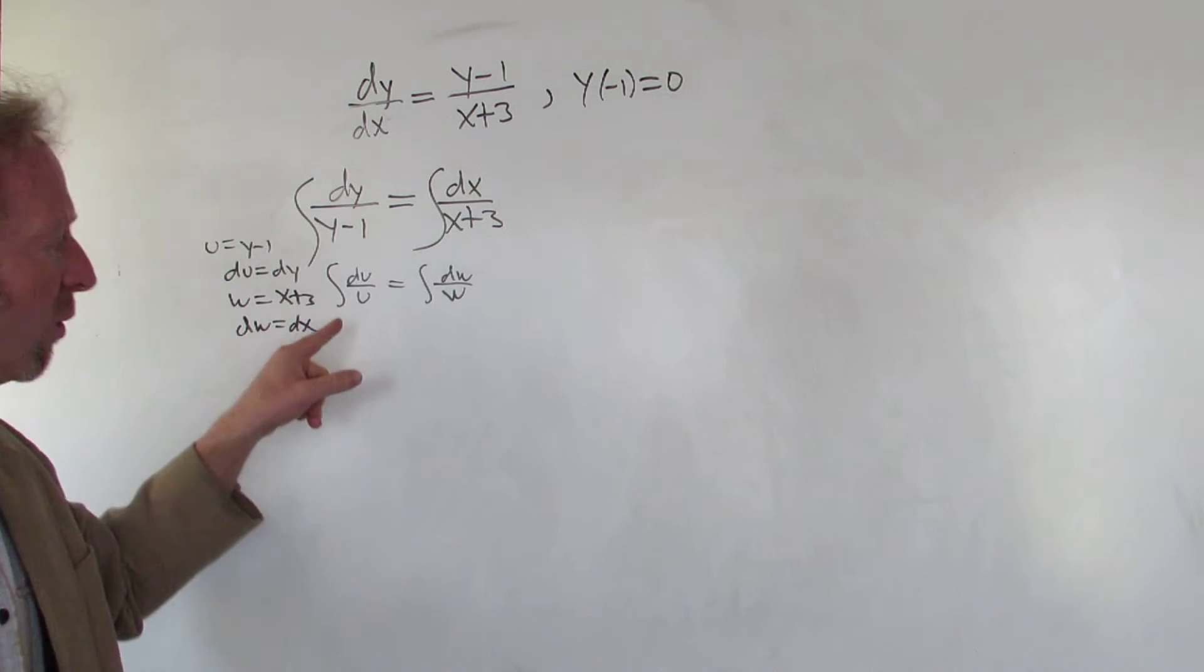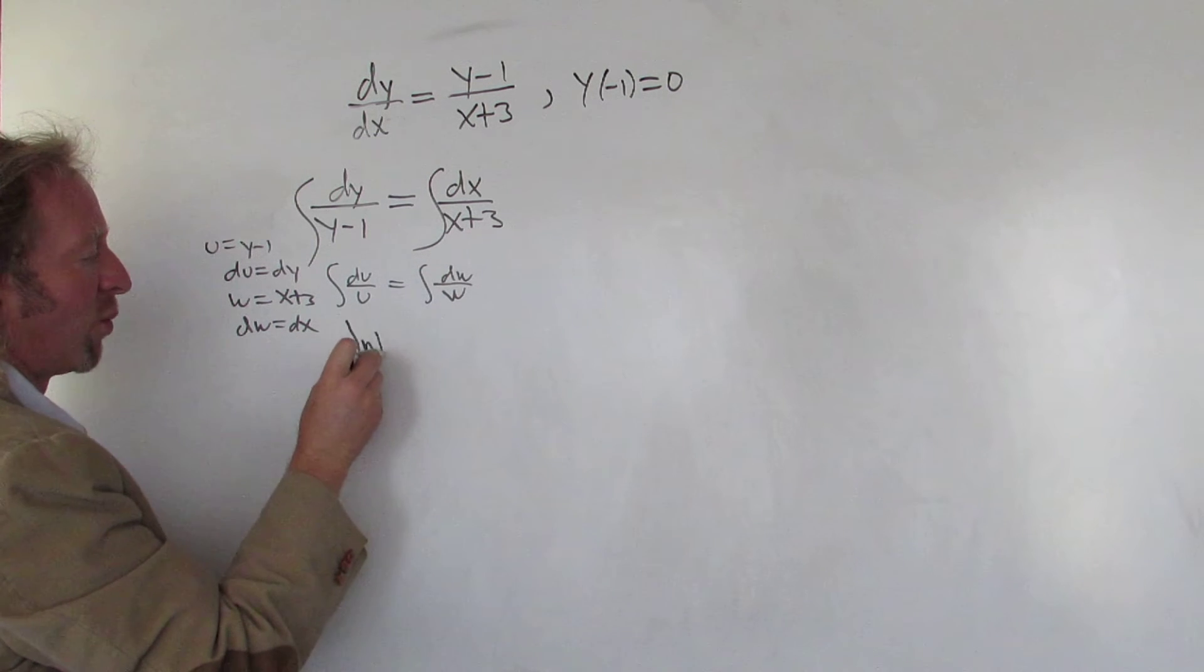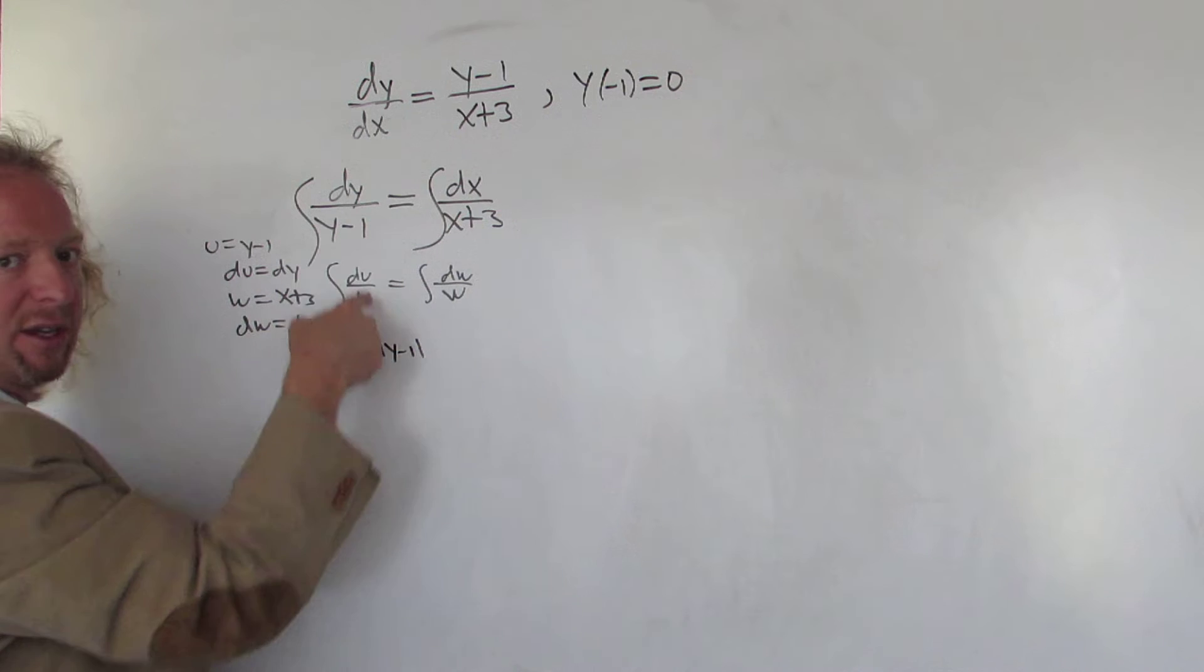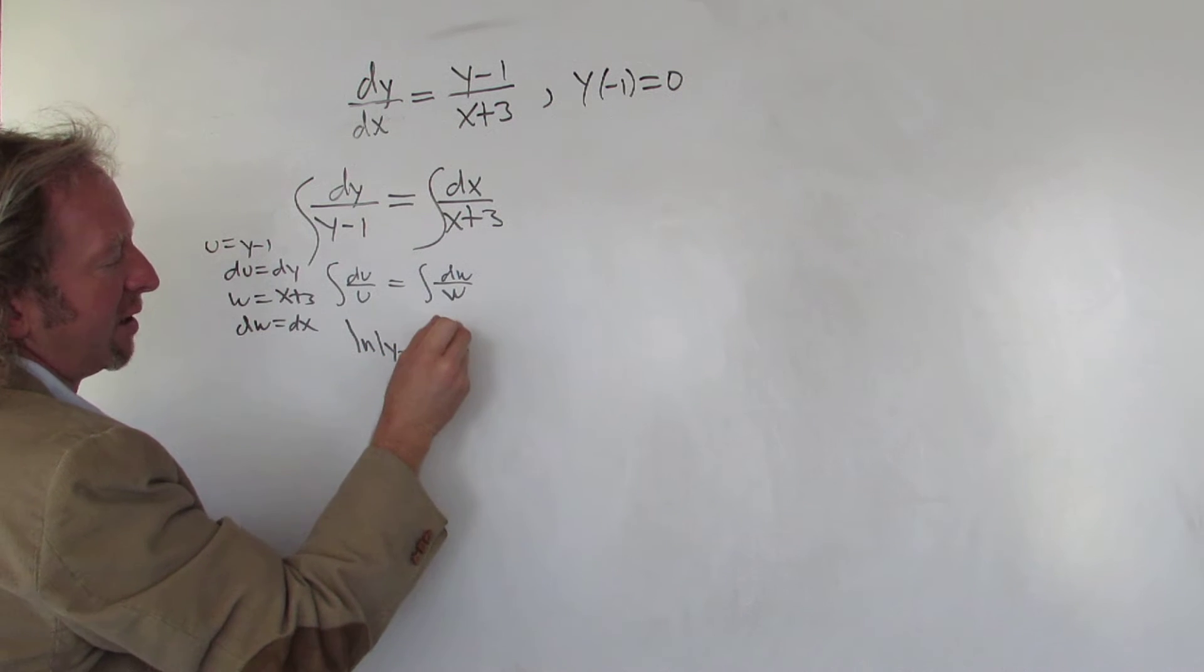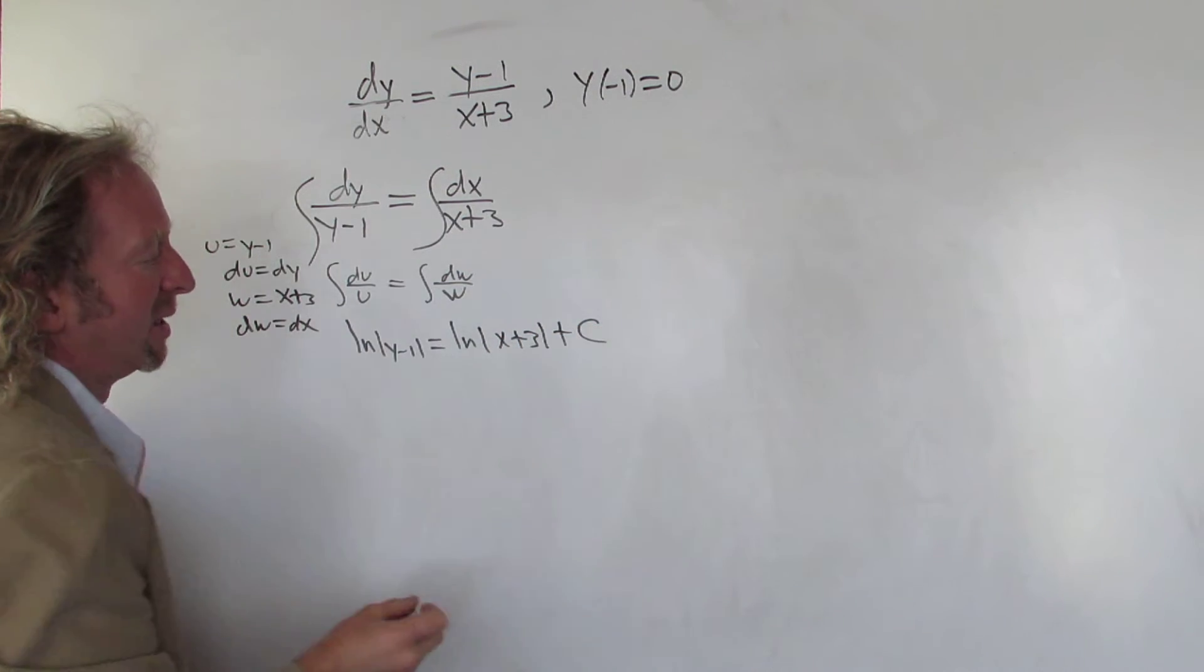When you integrate this, you get the natural log of the absolute value of u. But we know u is y minus one, so you can just go from here to here. And then here, natural log absolute value of x plus three. Then we have to add a constant - I'll just call it c.